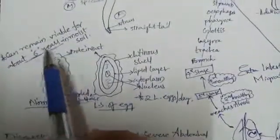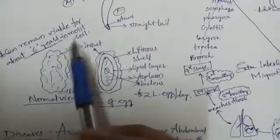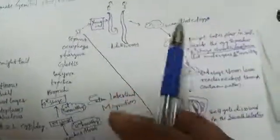The eggs can remain viable for about six years in moist soil under favorable conditions.